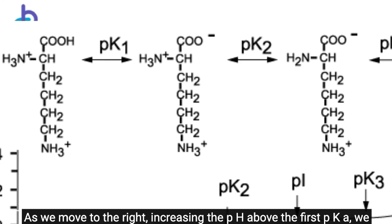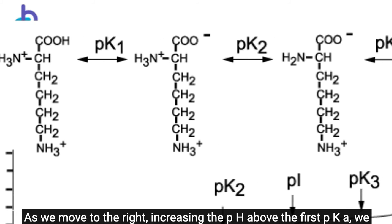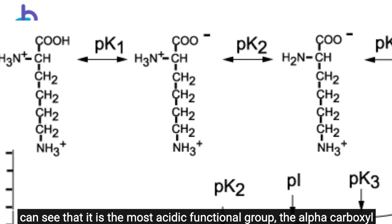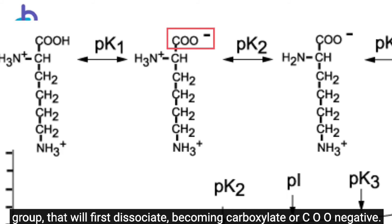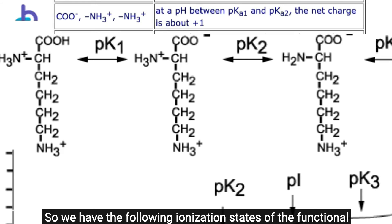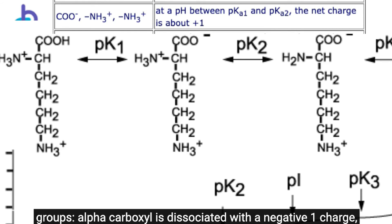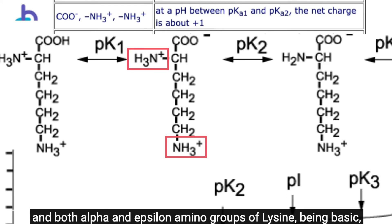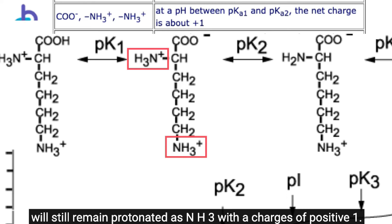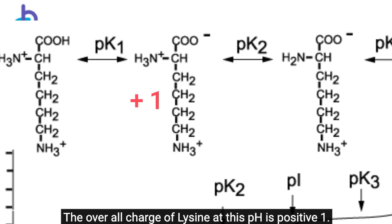As pH increases above the first pKa, the most acidic functional group — the alpha-carboxyl group — dissociates first, becoming carboxylate or COO-negative. The alpha-carboxyl is dissociated with a -1 charge, while both alpha- and epsilon-amino groups of lysine remain protonated as NH3-positive with charges of +1 each. The overall charge of lysine at this pH is +1.